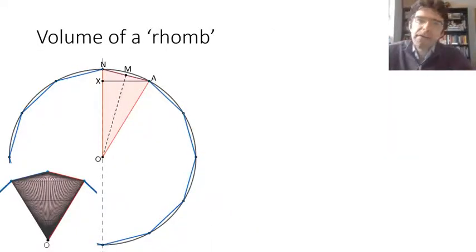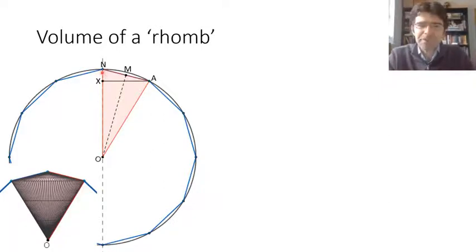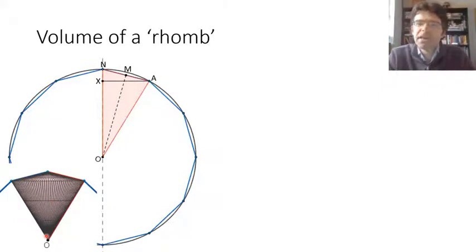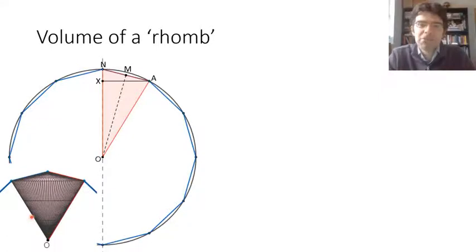So the red triangle NAO — I'm using N here a bit like North Pole — forms what Archimedes called a rhomb when rotated around NO. This is the same Greek word as rhombus, but rather than being two-dimensional, here it's like a spinning top shape. Archimedes may have been inspired by words used for a rotating object in Greek ritual — sometimes translated as a bull roar, like a kite-shaped wooden slab that you whirl around on a string and it makes a loud buzzing noise.